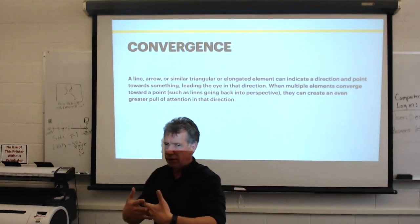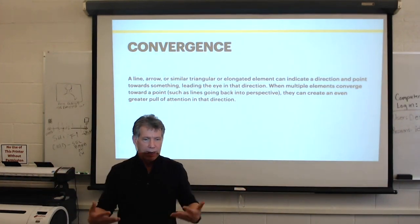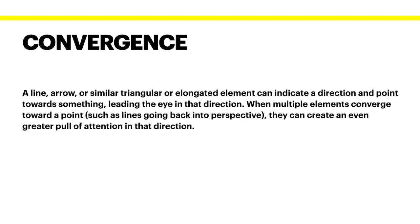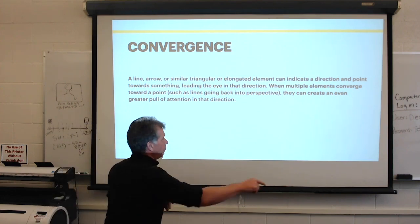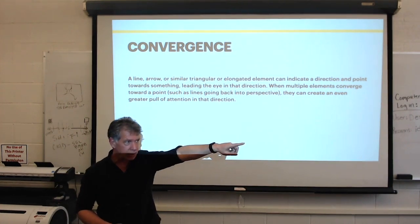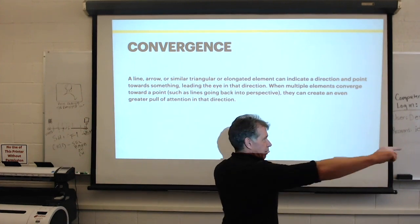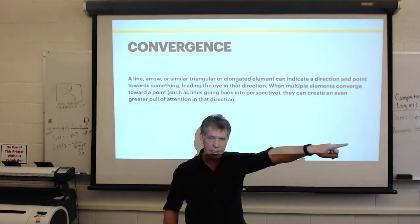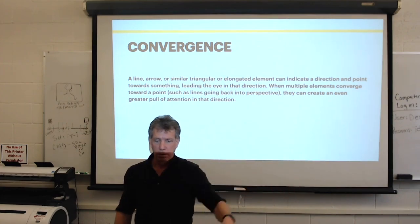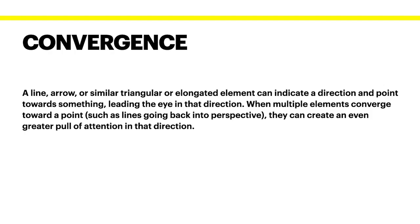Convergence. Now, convergence generally means things coming together. And I've got a couple samples in here. Hopefully, it will make sense as I go through it. But a line, arrow, or similar triangular or elongated element can indicate a direction and point towards something. Remember we talked about implied line? If I were to point like this, most people will mentally see a line that comes from our finger and will follow it until it stops at something that we think the person is pointing at. In this case, me. When multiple elements converge towards a point, such as lines going back into perspective, they can create an even greater pull of attention in that direction.